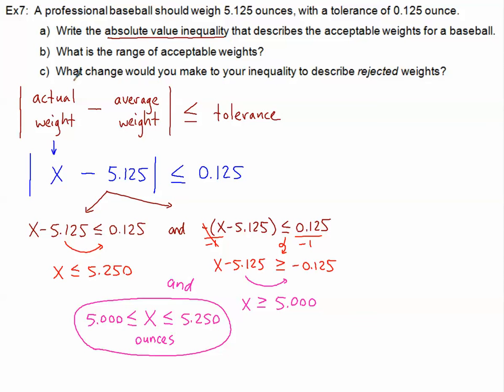Part C is interesting. It says, what change would you make to your inequality to describe the rejected weights? Well, if our inequality is right here in the blue, and these are all of the acceptable weights, the things that are less than or equal to the tolerance, then it would make sense for the rejected weights to be the same exact thing.